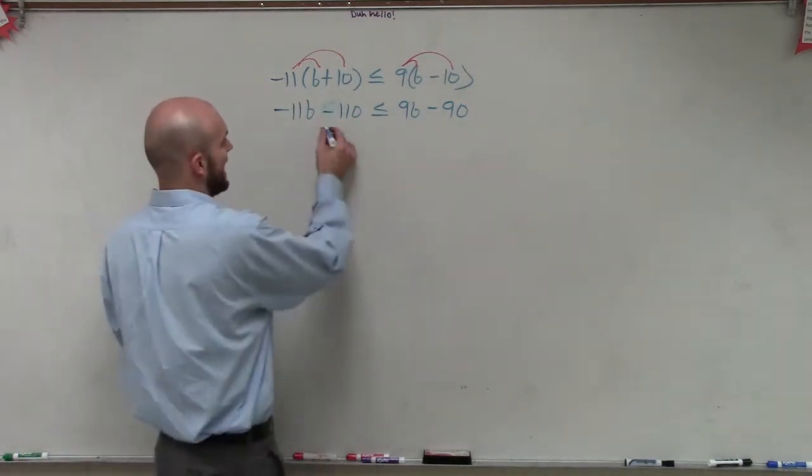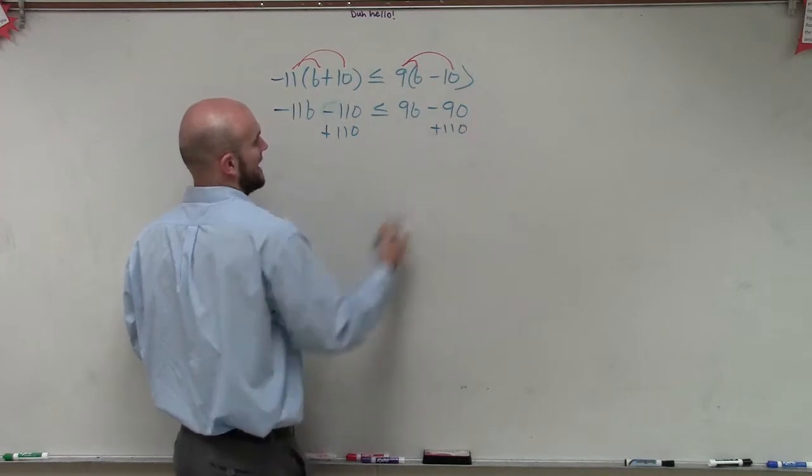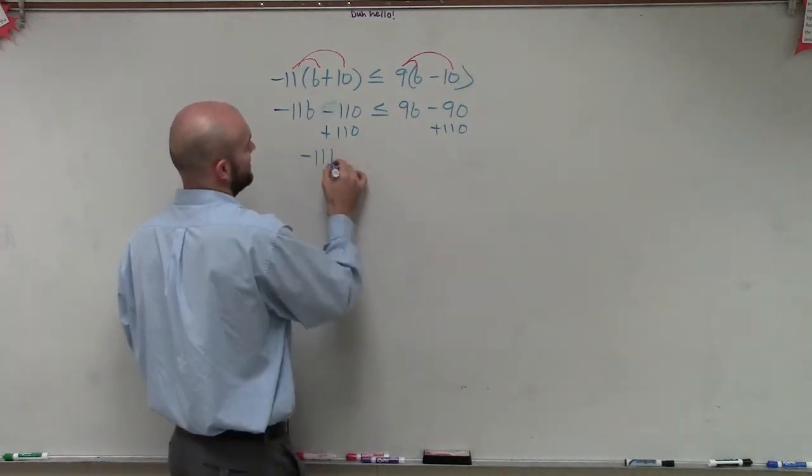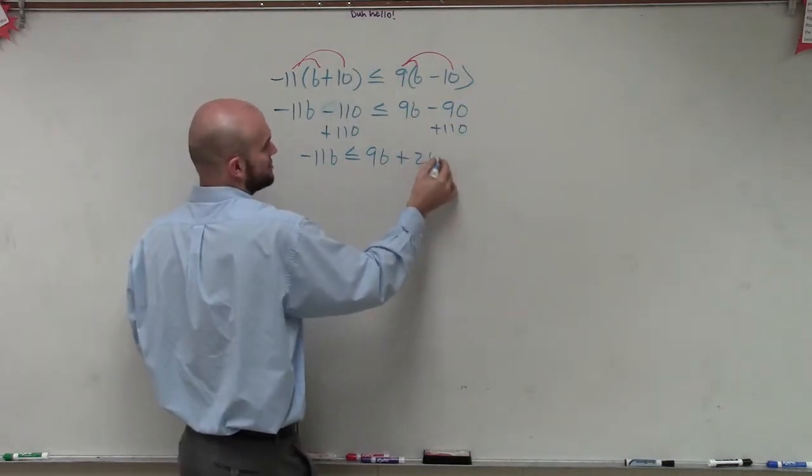So now what I'm going to do is I'm going to add 110. So now I need to isolate the variables. So I add 110. So I have negative 11b is less than or equal to 9b. And then this is going to be plus 20.